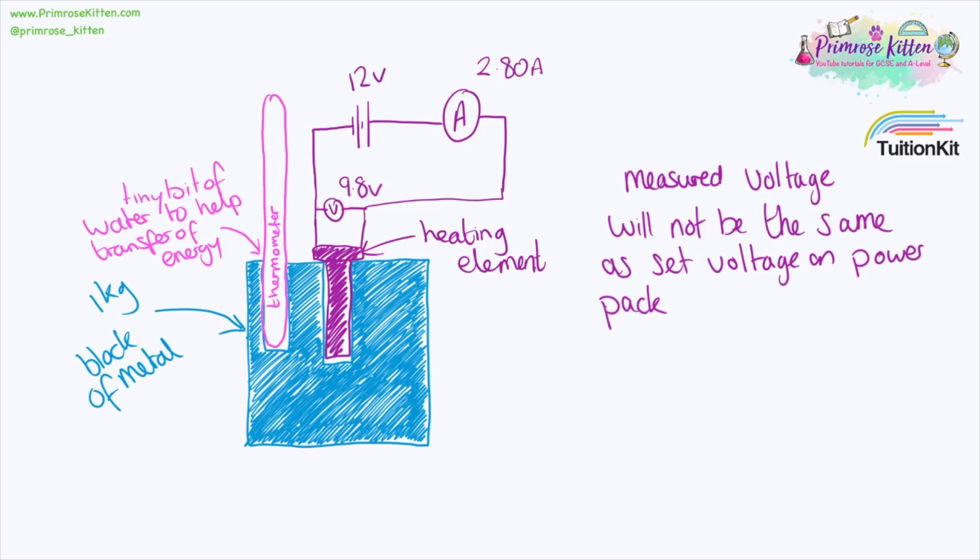I've drawn the circuit here kind of correctly, not including a multimeter so we have our ammeter in series and our voltmeter in parallel across the component that we're measuring the potential difference across. It is highly unlikely that your measured voltage across the component will be the same as what your power pack is set to.